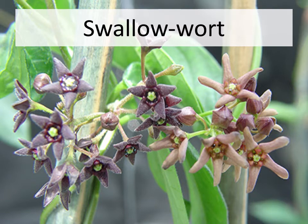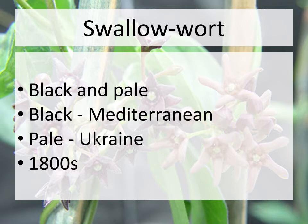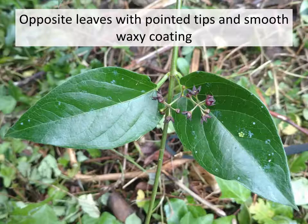This is swallowort. There are two kinds of swallowort — black and pale. The black has dark purple flowers and is native to the Mediterranean. The pale has light pink flowers and is native to the Ukraine. Both were brought over as ornamentals in the 1800s.